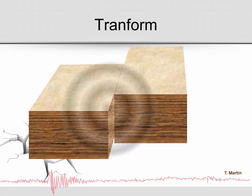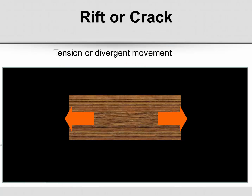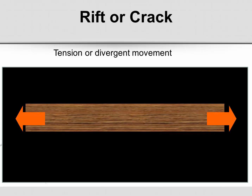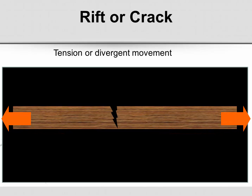Now let's take a look at the structures identified with each of these three types of motion. To start off with, let's talk about rifts or cracks. When the earth is pulling apart, or forces are acting on it in opposite directions, the crust will thin, stretch, and possibly crack. These cracks are often known as rifts, and this is caused by tension or divergent motion.